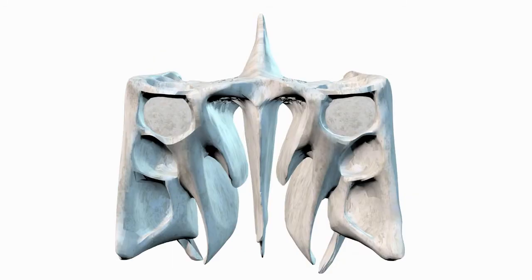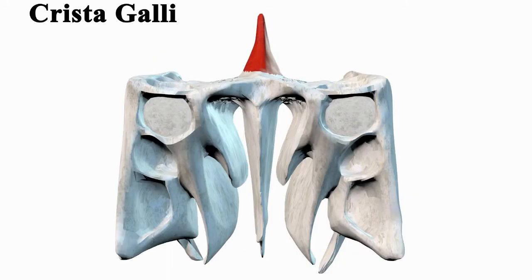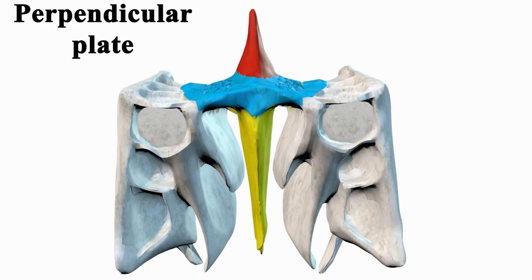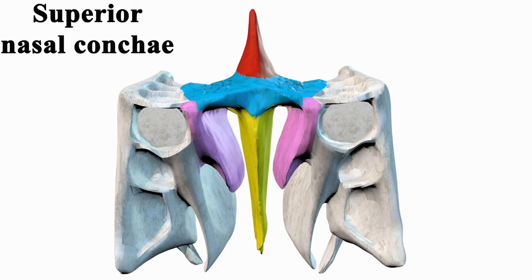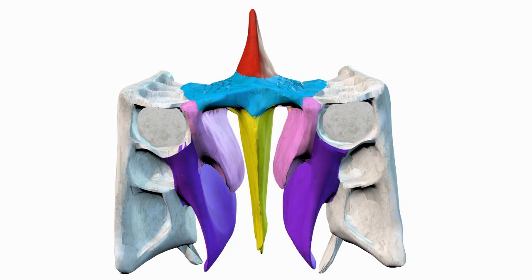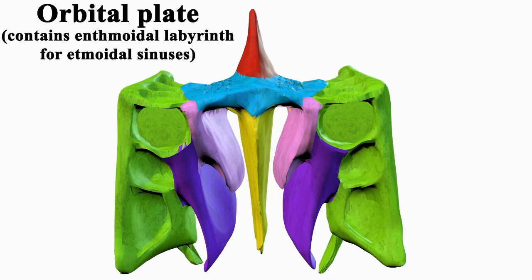The ethmoid bone consists of crista galli, cribriform plate which contains numerous olfactory foramina, perpendicular plate, superior nasal conchae, middle nasal conchae, and orbital plate which contains the ethmoidal labyrinth for ethmoidal sinuses.